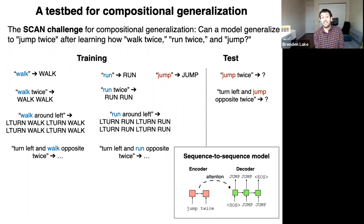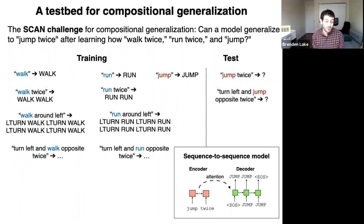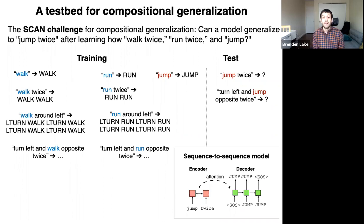We're going to use sequence-to-sequence neural network models, which is the dominant technology for problems like machine translation and question answering, and what powers almost all currently deployed machine translation systems in industry. The basic way it works is two neural networks: an encoder that reads in the instruction and learns an embedding for it — for instance, embedding 'jump twice' — and then passes messages to a decoder, which transforms that into the actions needed to perform the command.